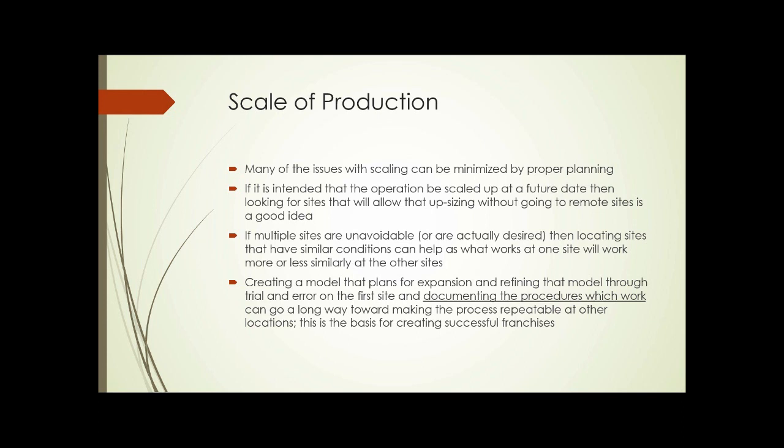Create a model that plans for expansion, then refine that model as you operate the original site through trial and error. Find out what works and document the procedures that work — that goes a long way towards making your process repeatable at other locations. This whole idea of documentation is the basis for creating successful franchises. All of the fast food franchises look the same, operate the same, and the food tastes the same from site to site because of this.